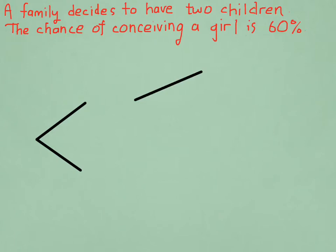So there's my first branch. Oh, I went a bit too far there. There's my first branch. And that represents the first child. But I also need to represent the second child. And that's the second branch.